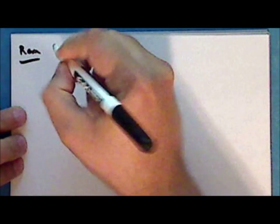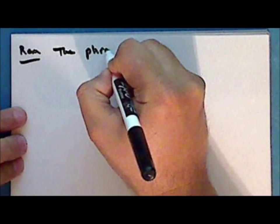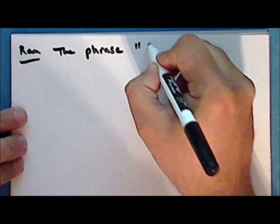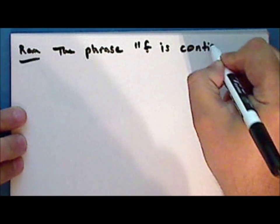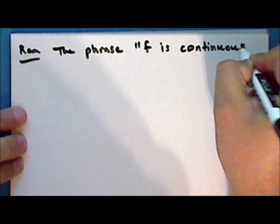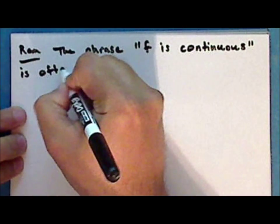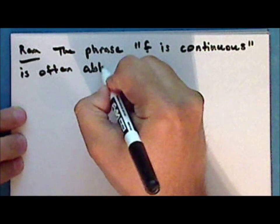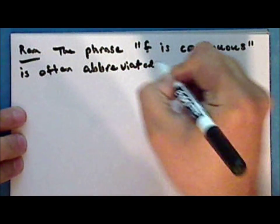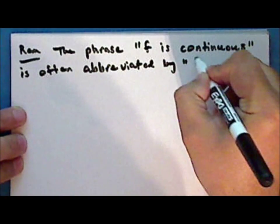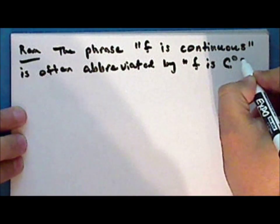The phrase 'F is continuous' is often abbreviated by 'F is C superscript zero' (written C⁰).